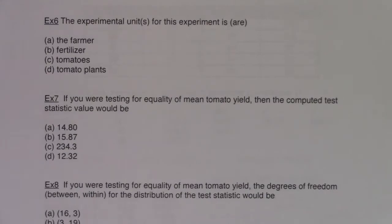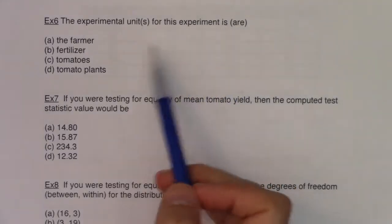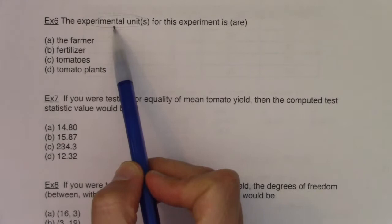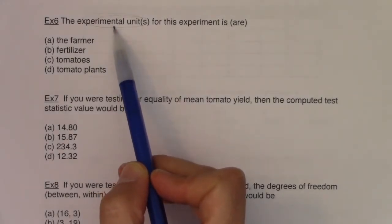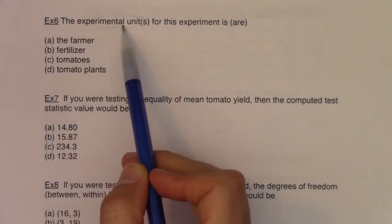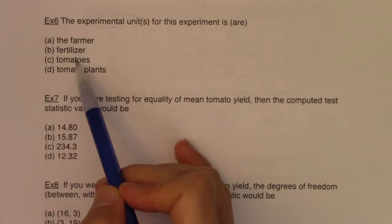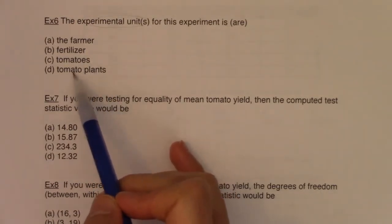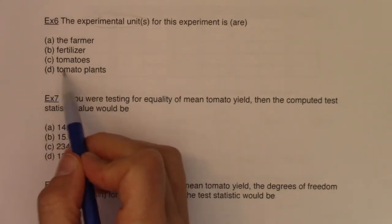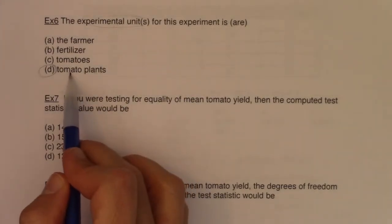Now let's answer the last few multiple choice questions. 'The experimental units for this experiment are' — this is a vocab term from chapter one. An experimental unit is a single object or individual that is to be measured. We weren't measuring the farmer, the fertilizer, or the tomatoes themselves — we were measuring the tomato plants. We were counting the number of tomatoes produced, and the tomato plants were what actually received the treatment.